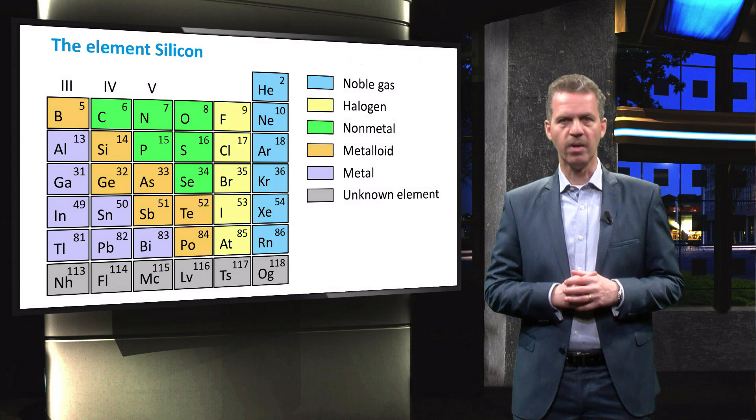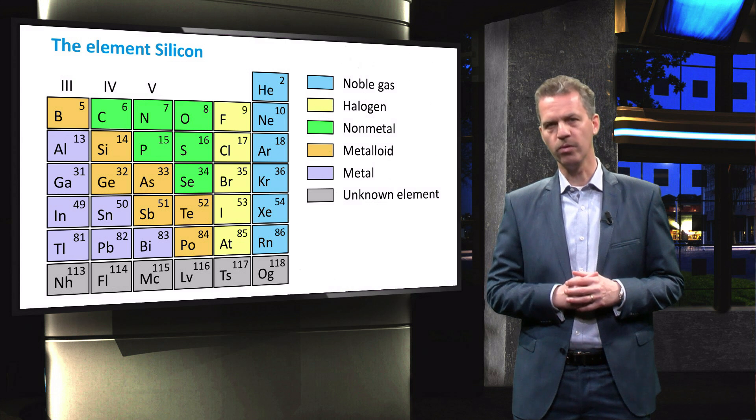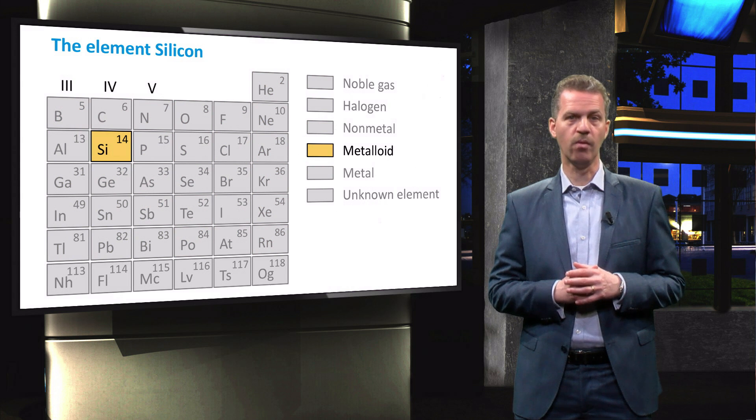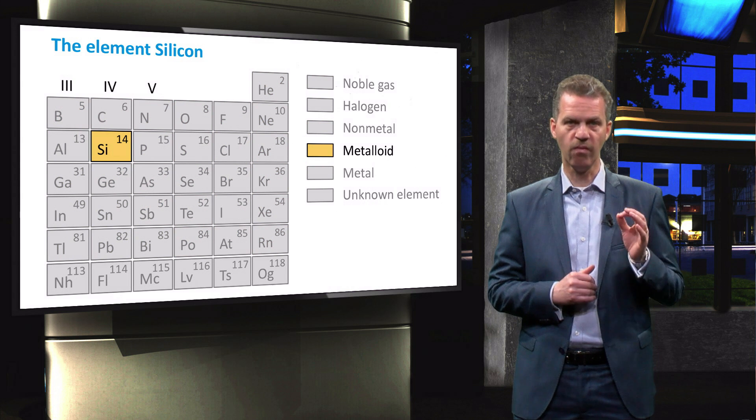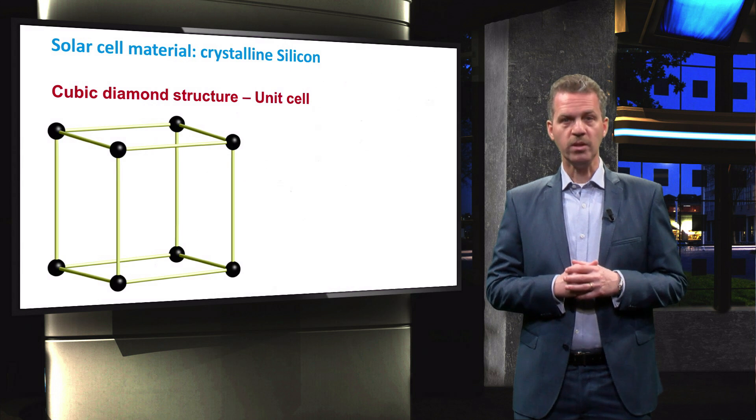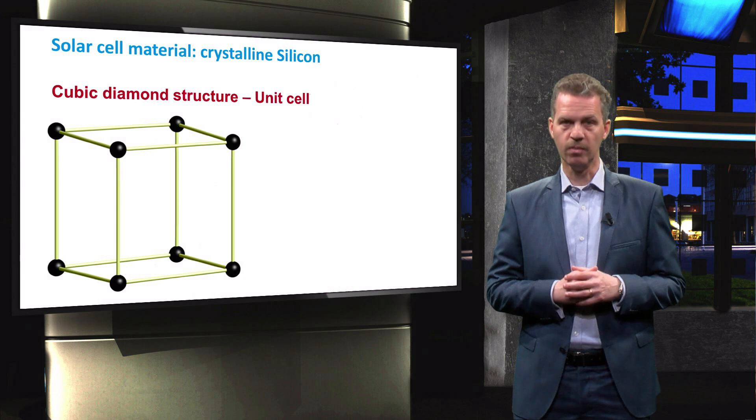The element silicon is a metalloid with atomic number 14. It has 4 valence electrons and can therefore make covalent bonds with 4 neighboring atoms. The crystal structure of crystalline silicon is cubic diamond.